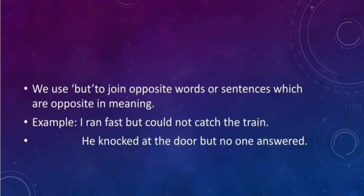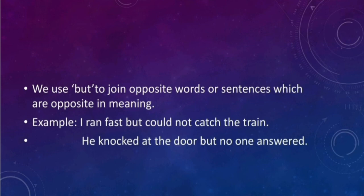We use 'but' to join opposite words or sentences which are opposite in meaning. For example: 'He ran fast but could not reach the train' — running fast should result in catching the train, but it did not happen, so there are two opposite ideas. 'He knocked at the door but no one answered' — when you knock, the expected result is that somebody responds, but it did not happen.